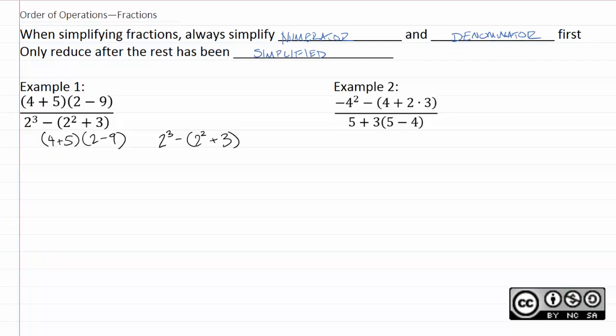So, I can just take 4 plus 5 and get 9. Then, 2 minus 9 is negative 7, and 9 times negative 7 is negative 63.